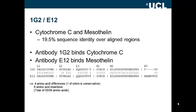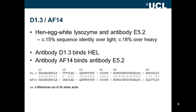Antibodies 1G2 and E12 both bind to proteins, but these proteins are clearly not homologues and have less than 20% sequence identity. Despite these very different antigens, the antibodies show just four amino acid differences in the CDRs, one of which is a conservative change, and six insertions. D1.3 and AF14 are antibodies that bind two very different proteins — they are clearly not homologues. D1.3 binds to hen egg white lysozyme while AF14 is a so-called anti-idiotypic antibody that binds to the combining site of another antibody called E5.2. Yet D1.3 and AF14 have just four amino acid differences out of 56 amino acids in the CDRs.